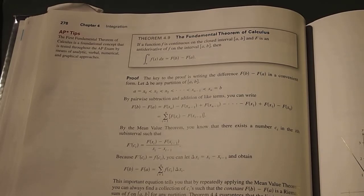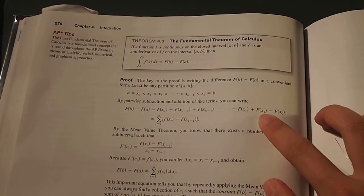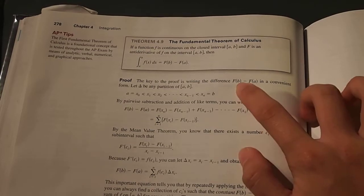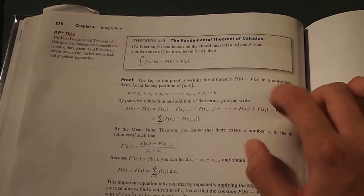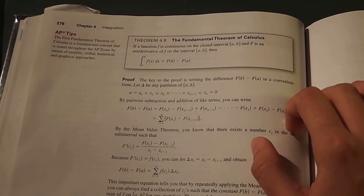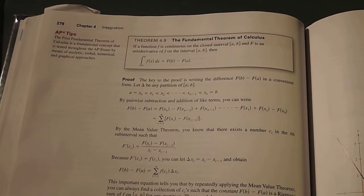So an important part to this proof is writing the difference capital F(b) minus capital F(a) in a convenient form, so delta would still be any partition of a to b.